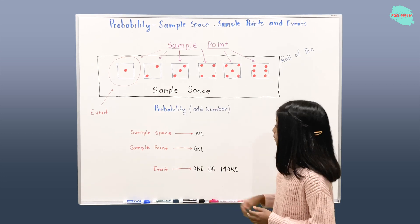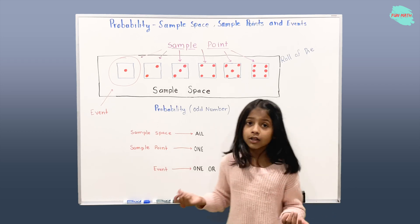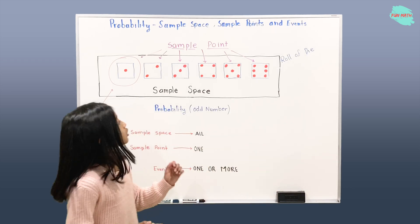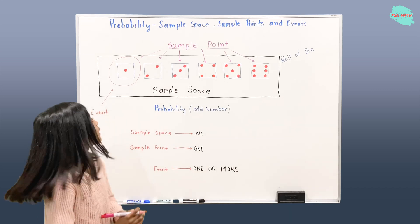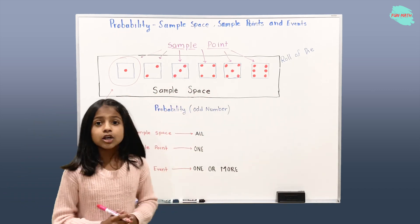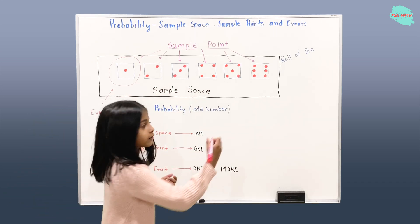So the probability of getting an odd number can be written as numbers. So how many odd numbers are there? There are 3. 1, 2, 3. So we write 3 right here.